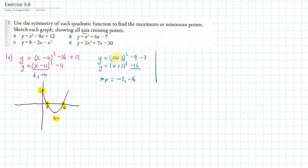Now let's find where it crosses the x-axis and y-axis. It crosses the y-axis when x equals zero, so y equals 0 plus 3, all squared, minus 16, which is 9 minus 16, which is negative 7. For the x-axis, when y equals 0, we get x plus 3, all squared, equals 16.